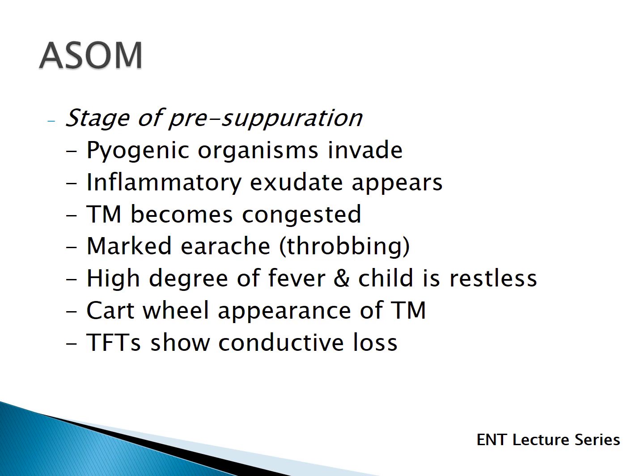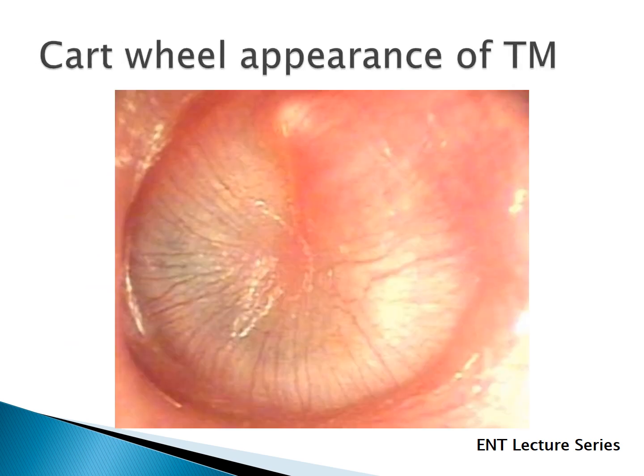As the disease progresses, the second stage is the stage of pre-suppuration. Here, organisms invade the middle ear, the sterile fluid becomes inflammatory exudate, and the tympanic membrane starts congesting, becoming red. Earache increases and becomes throbbing due to pus collection. There is high-grade fever and the child looks restless. On otoscopic examination, the tympanic membrane appears like a cartwheel — a leash of blood vessels radiates from the center to the periphery. Tuning fork tests again show conductive hearing loss.